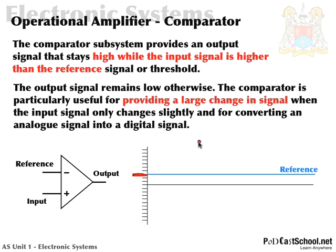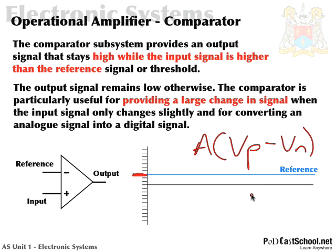So typically the output is A — which is very large — times the voltage at the non-inverting input minus the voltage at the inverting input. This time our inverting input is the reference, and the non-inverting input is the input signal.